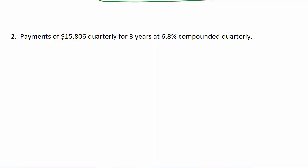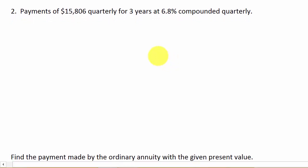Alright, so we've got payments of $15,806 quarterly for three years at 6.8% compounded quarterly. So once again, let's write the formula down. So we have P is equal to R times 1 minus 1 plus I to the negative N over I.